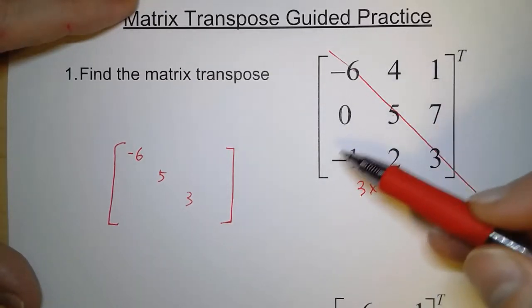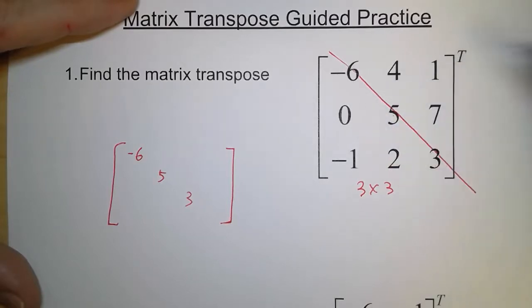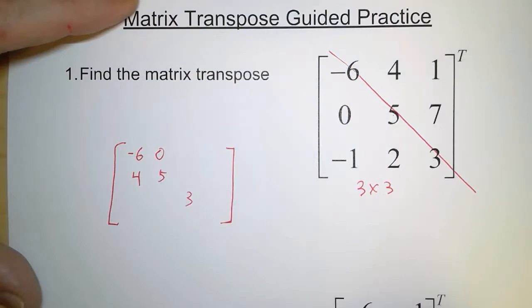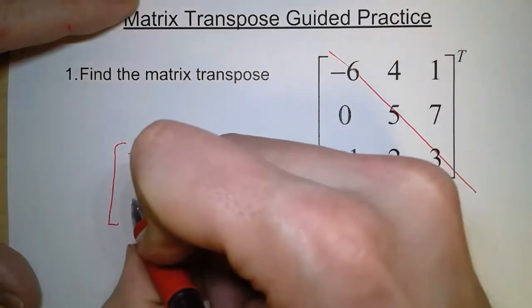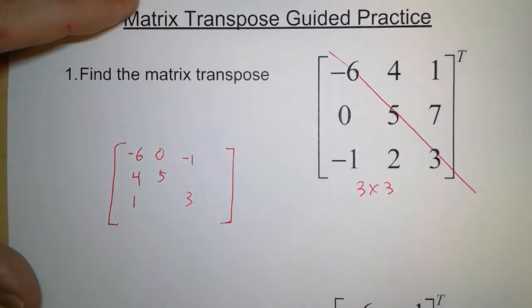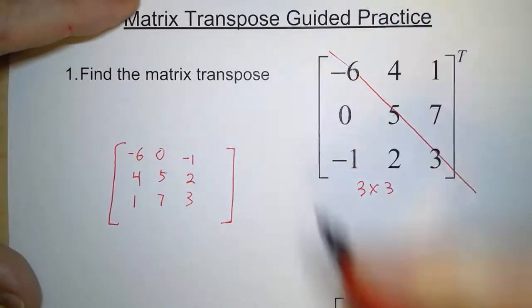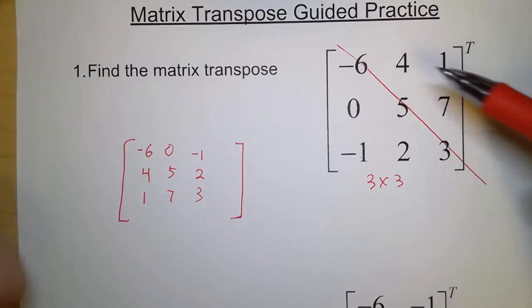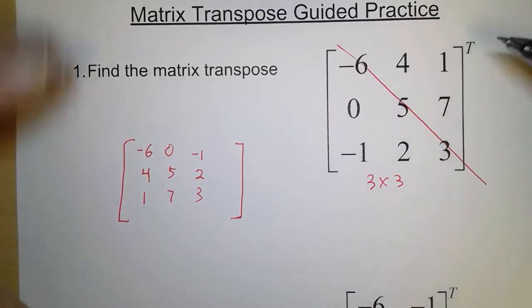But everything else is going to swap places on either side of the line. So the 4 and the 0 are going to trade places, so we have a 4 here and a 0 here. We have a negative 1 and a 1 — they're going to trade places — so a 1 and a negative 1. And a 2 and a 7, they are going to trade places. And there we go — there is our transpose of this matrix. We draw a line, these numbers don't change, everything else changes around them.